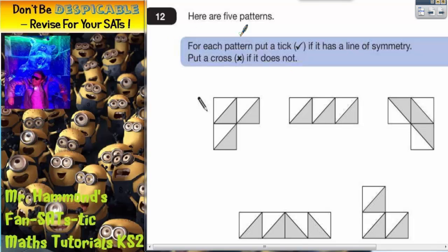Question 12. Here are five patterns. For each pattern put a tick if it has a line of symmetry, put a cross if it does not.